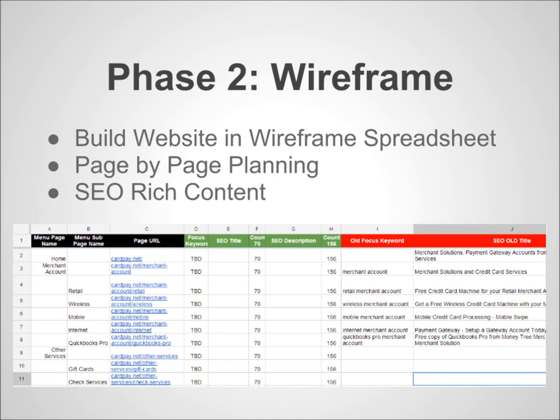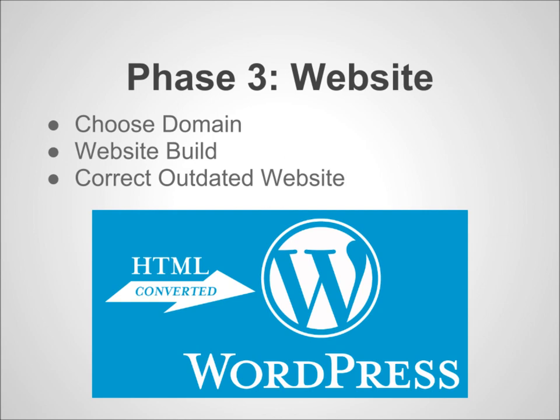Once you've built that wireframe, you can then go to phase 3, which is your website build. People that haven't built a website or haven't purchased a domain — perhaps planning to do some affiliate marketing — would at this point choose a domain based on keyword research. If you have an existing site, we would look at your existing website design and correct any outdated technology such as outdated HTML, convert it to WordPress, or if you're already in WordPress, we would go in and tweak your on-site SEO and make it perfect before continuing on to phase 4.